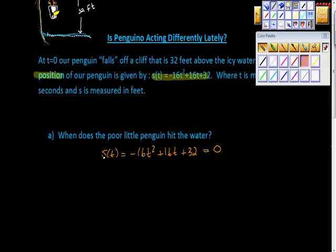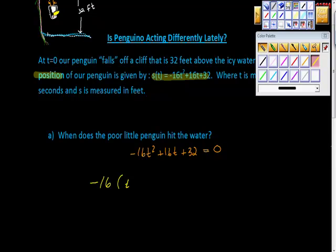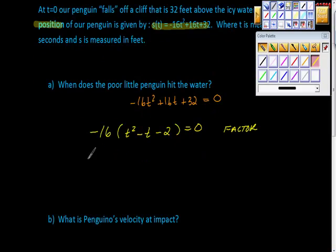We're going to say that's zero. And then we're just going to do some algebra here. I'm going to factor out the greatest common factor here, which is negative 16. So I'm going to take out negative 16, and it gives us T squared minus T minus 2. That's still set to zero. We can factor this some more.